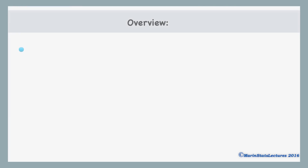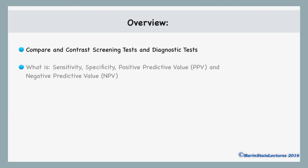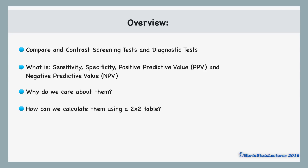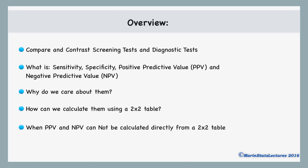In particular, we will compare and contrast screening and diagnostic tests, define sensitivity, specificity, positive predictive value, and negative predictive value. We'll talk about why we care about these, look at how to calculate them using 2x2 tables, and finally talk about when using a 2x2 table will lead us to an incorrect calculation of the positive predictive value and negative predictive value.